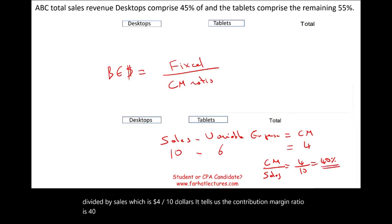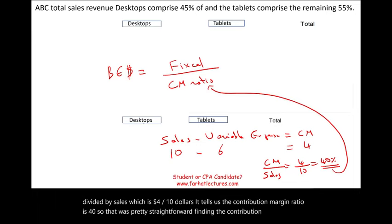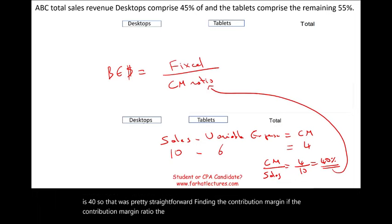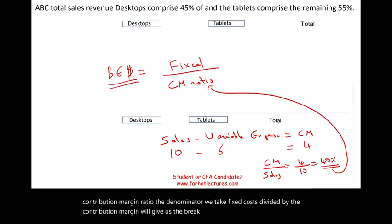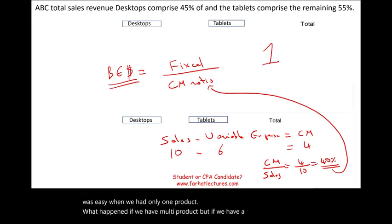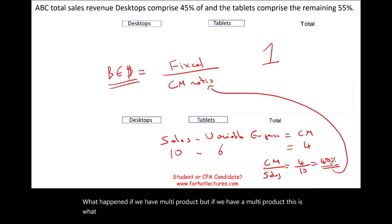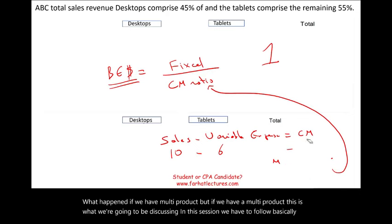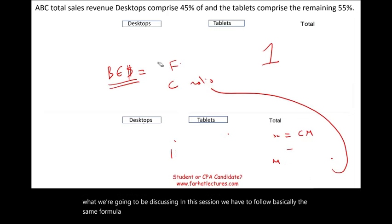Finding the contribution margin ratio was pretty straightforward. The denominator: we take fixed cost divided by the contribution margin ratio, which gives us the break-even in terms of dollar sales. That was easy when we had only one product. But what happens if we have multiple products? That is what we're going to be discussing in this session.